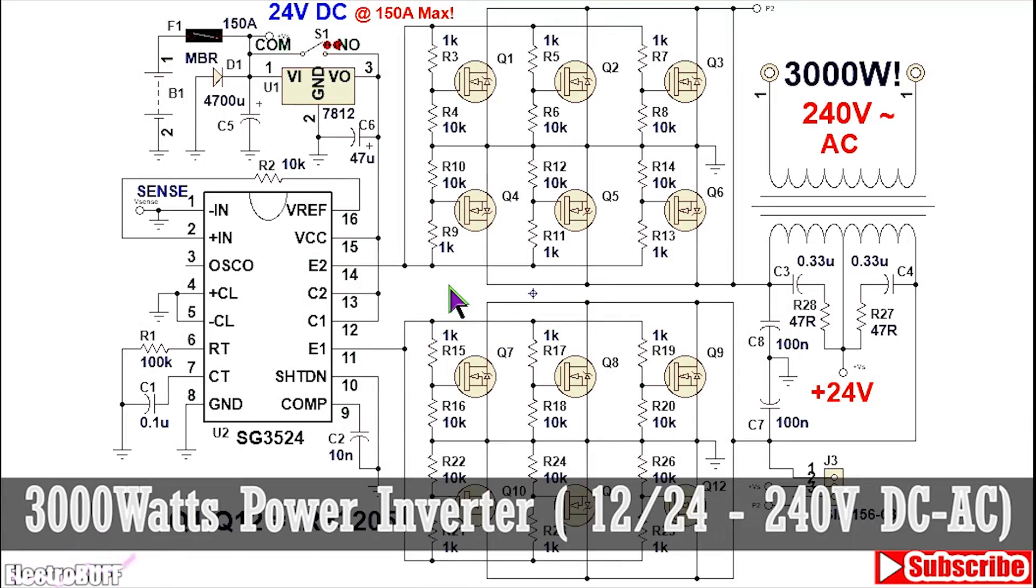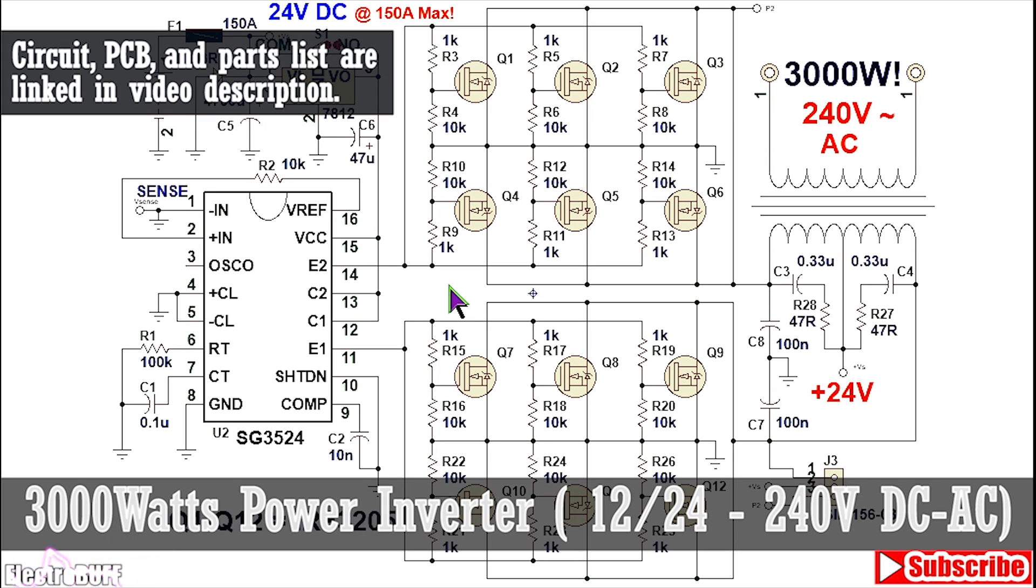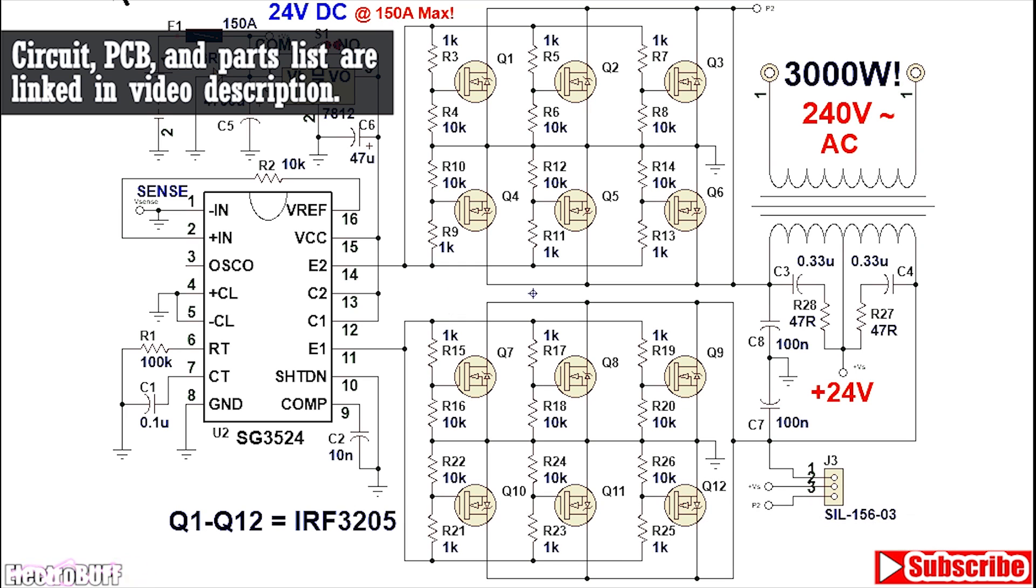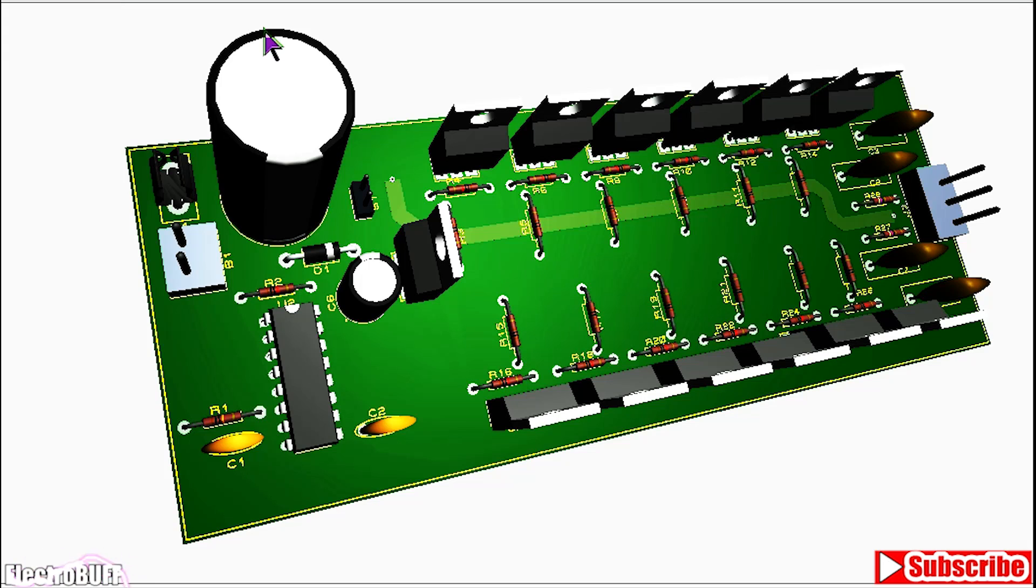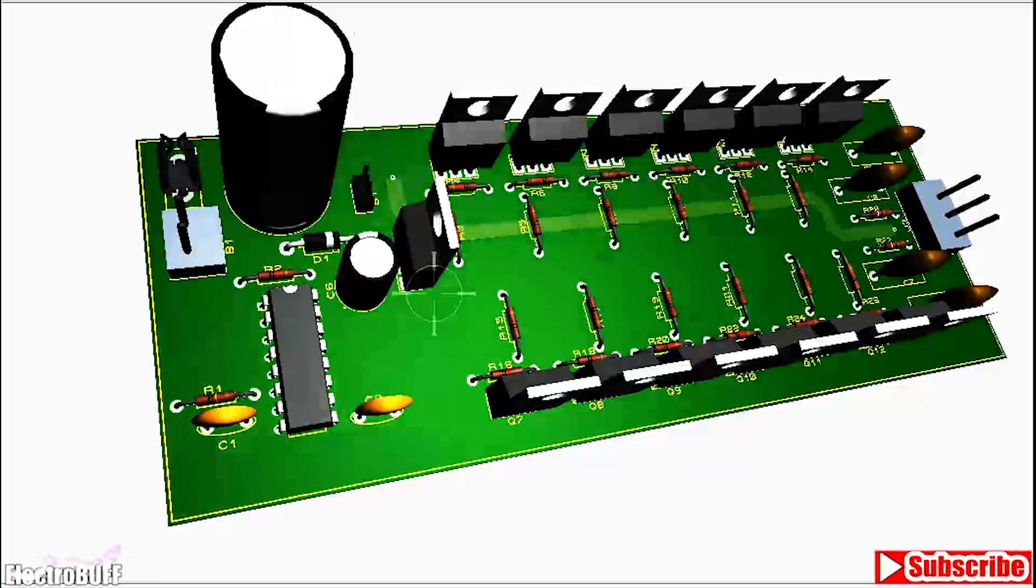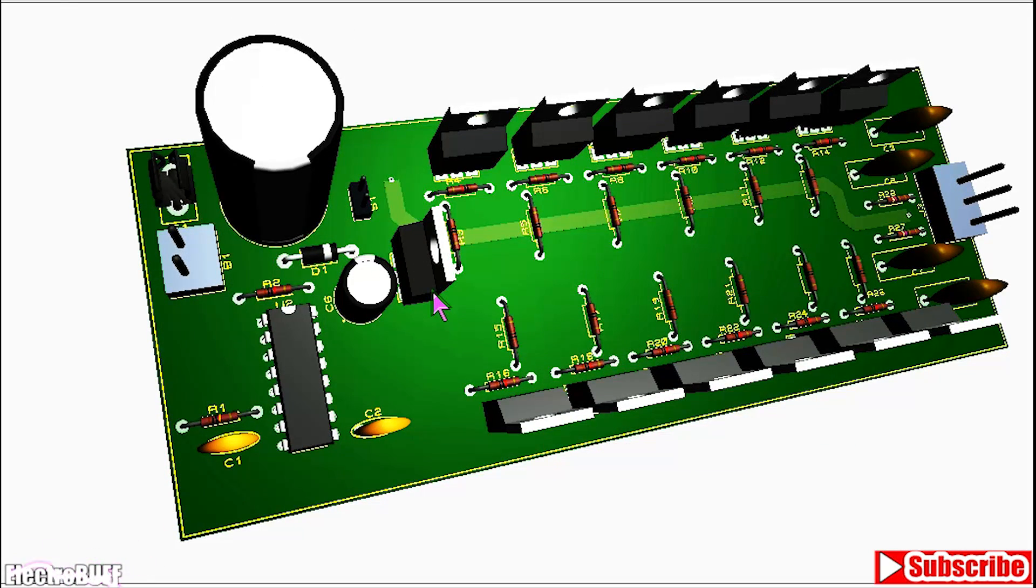Hi, in this video I'll show you how to make this 3000 watt power inverter with just a handful of components. The circuit is very simple. This is the complete schematic of the project and I have also designed a PCB. The final board should look as shown. It is a very tiny board measuring about 6 centimeters by 14 and a half centimeters.